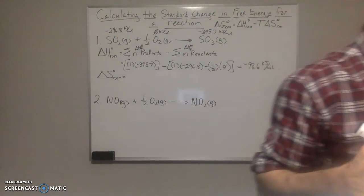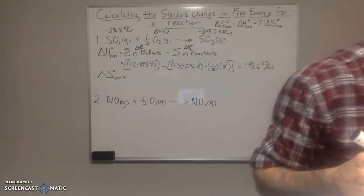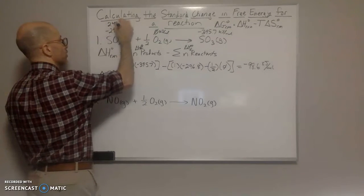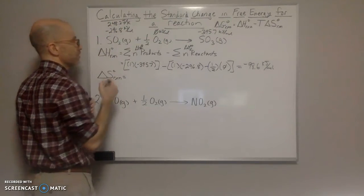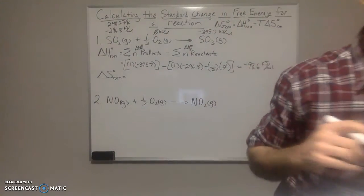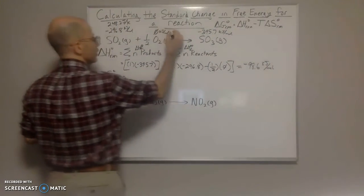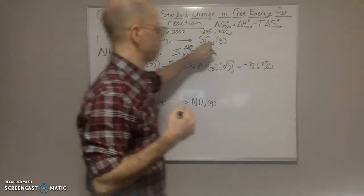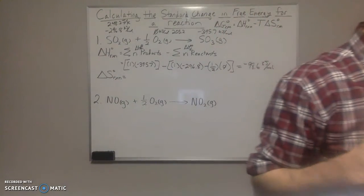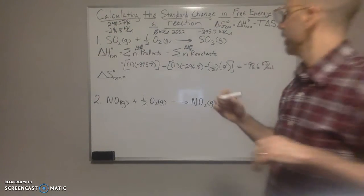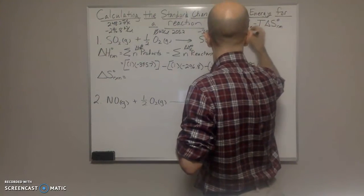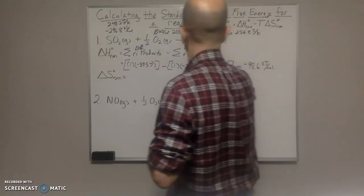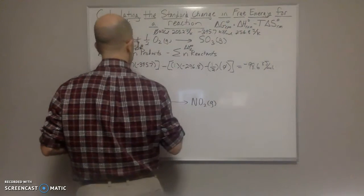When you look that up, for SO₂ gas it's 248.2 joules per Kelvin. For oxygen, it's 205.2 joules per Kelvin. And then for SO₃, it's 256.8 joules per Kelvin.